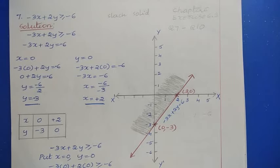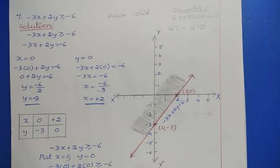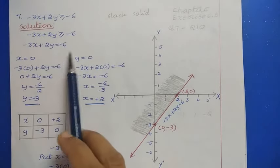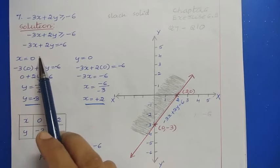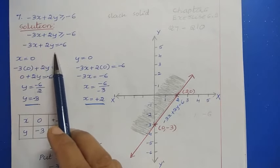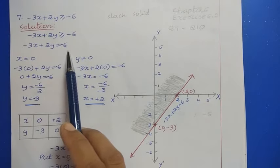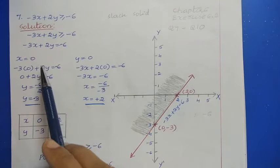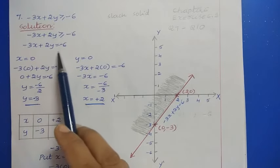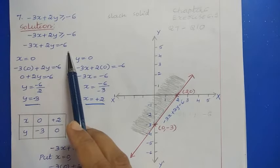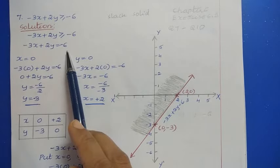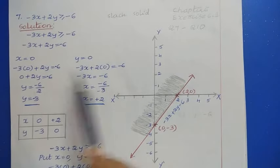Question number 7: -3x + 2y ≥ -6. First, convert the given inequality into an equality statement, so we have -3x + 2y = -6. Next, find the solution for this equality by taking x = 0 and y = 0.